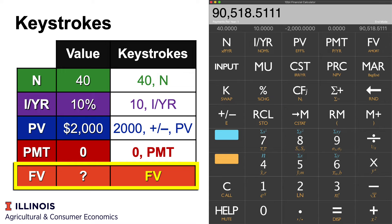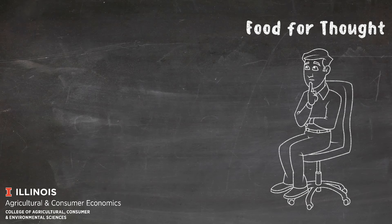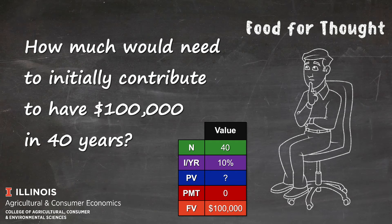That's quite a bit of growth from $2,000 over 40 years. But let's think about this for a minute — how much would we need to initially contribute to have $100,000 in 40 years? We weren't quite there in the last example. So if I'm trying to solve for $100,000, I'll flip this question a bit and still use the same keystrokes but with slightly different variables.